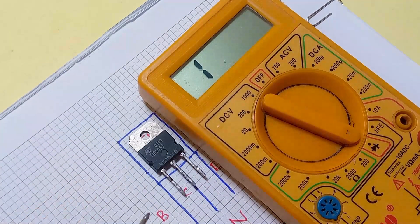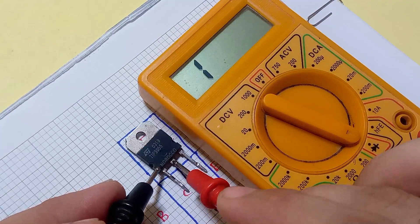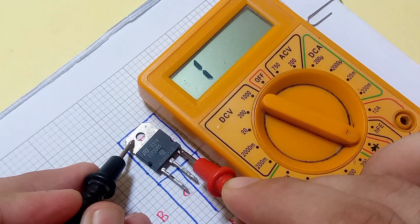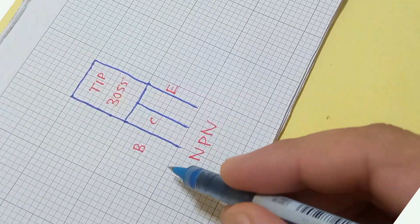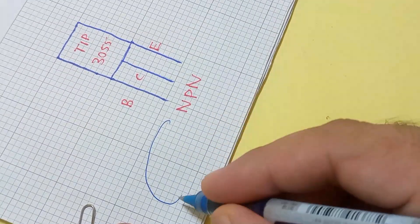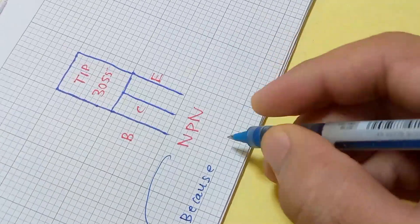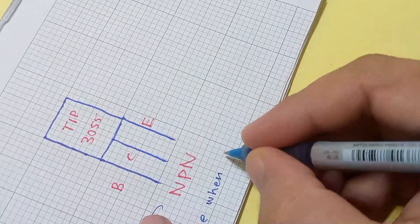And if we change the polarity, meaning that negative is connected with the base, it does not show any reading. So the TIP3055 transistor is an NPN type transistor.